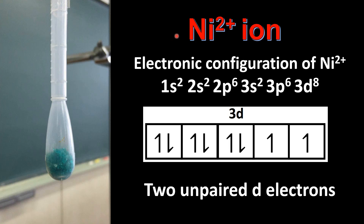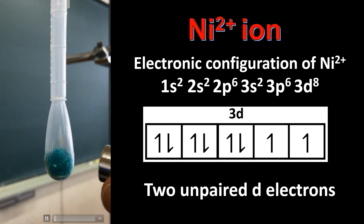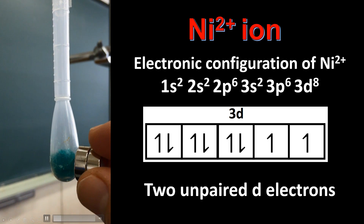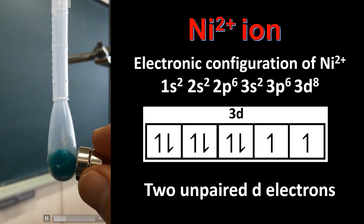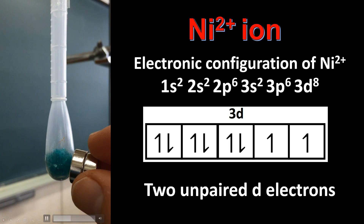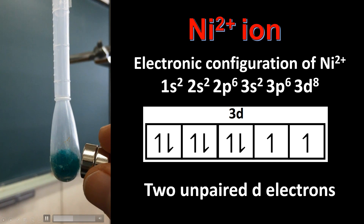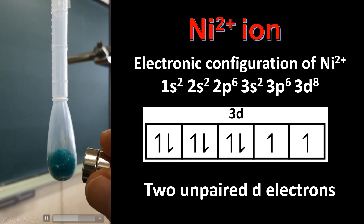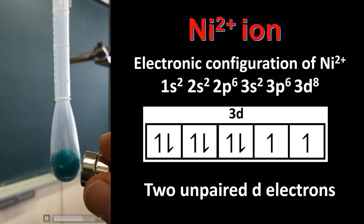Moving on to the nickel 2+ ion. Here we have the electronic configuration of the Ni²⁺ ion and as you can see from the orbital diagram there are two unpaired d electrons. Once again we'll have a look at the effect of an external magnetic field on the sample of nickel nitrate, and as you can see there's quite a strong attraction between the magnet and the sample.